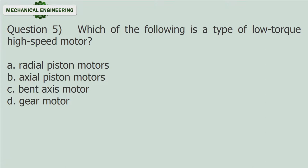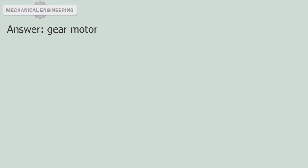Question 5: Which of the following is a type of low torque high speed motor? A) radial piston motors, B) axial piston motors, C) bent axis motor, D) gear motor. Answer: Gear motor.